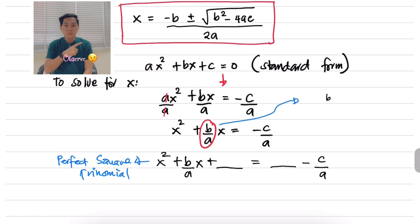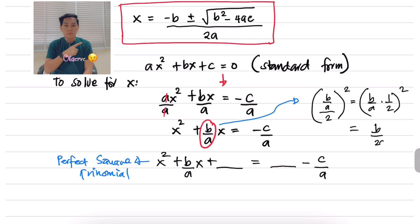The expression b over a will be divided by 2 and then you square it. That becomes b over a times 1 over 2, taking the reciprocal of 2. So now we have b over 2a, squared, and simplifying that gives us b squared over 4a squared.